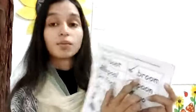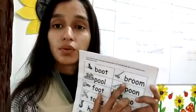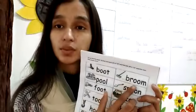What is this? Broom. B-R-OO-M. Broom. The next word is pool. P-OO-L. Pool.